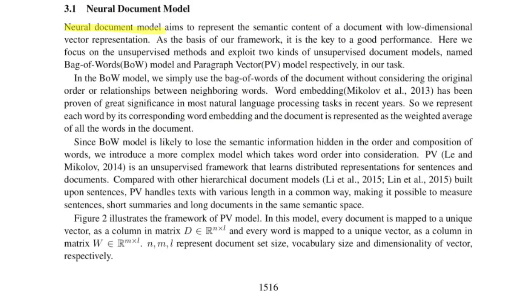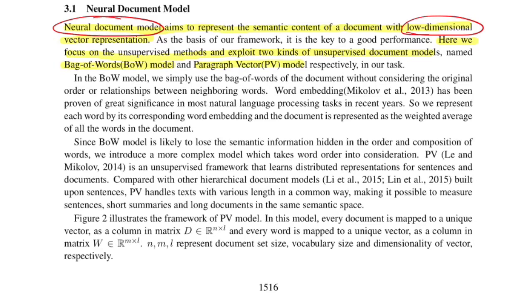The neural document model aims to represent the semantic content of a document with a low-dimensional vector representation. Here they focus on unsupervised methods and exploit two kinds of unsupervised document models: the bag-of-words model and the paragraph vector model. The neural document model is a system that converts every document to a low-dimensional vector representation, and they experiment with these two unsupervised techniques.